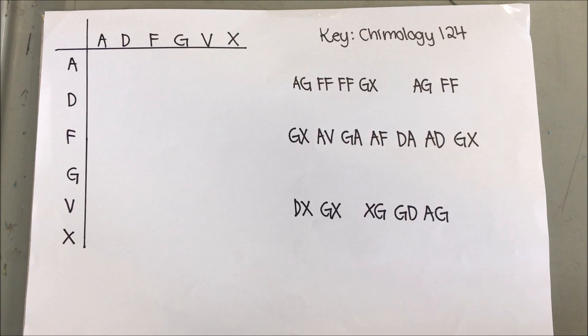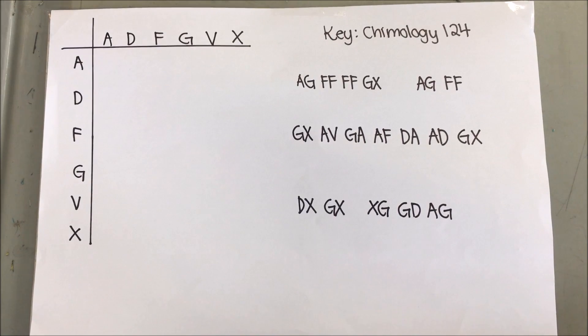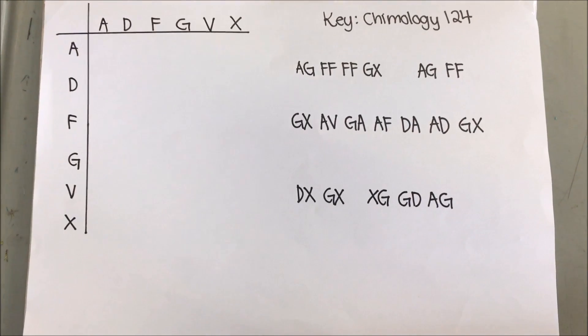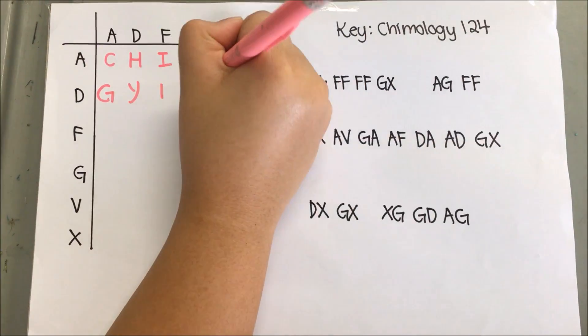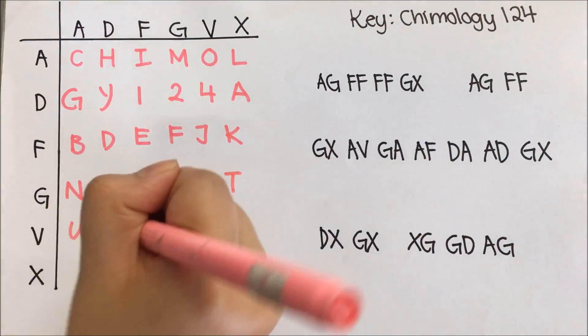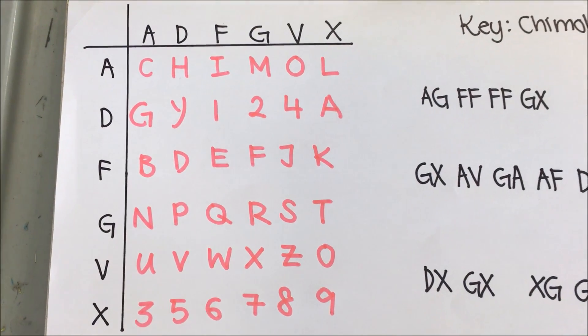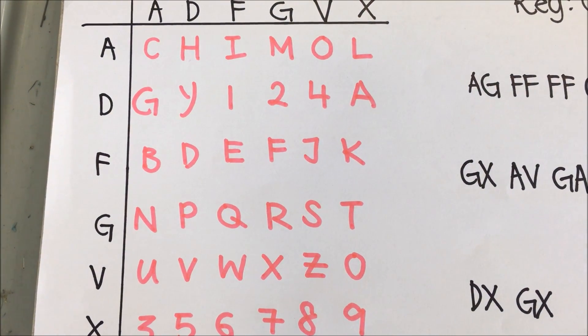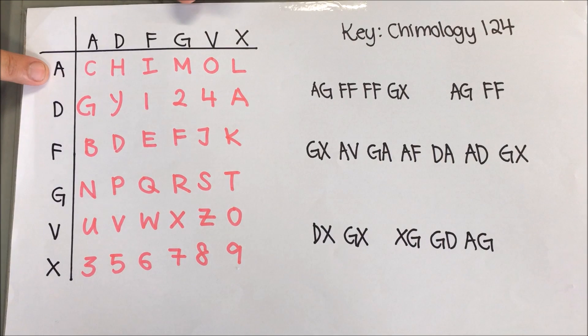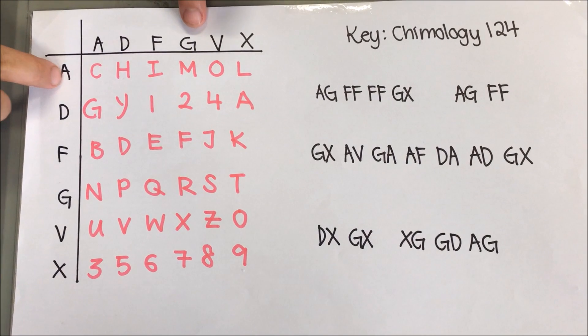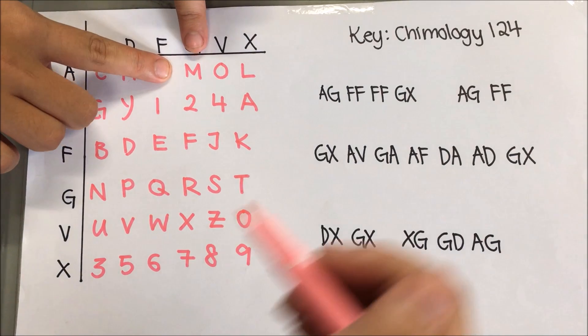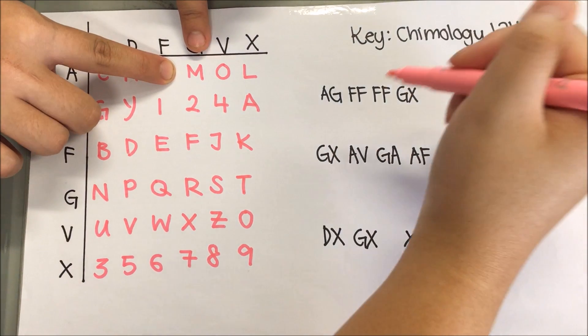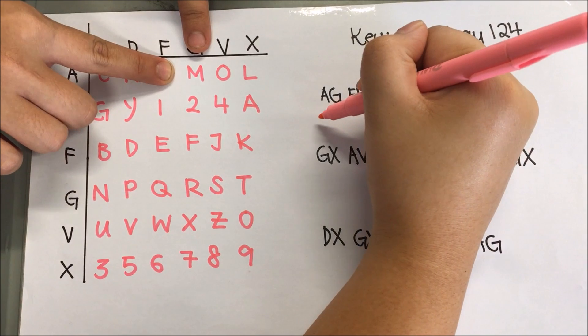Now let's take a look at an example. In this case, the message is encrypted and the key to this message is Chemology 124. Now, let's complete the polybius square. Now that it's done, let's decrypt the message. The encrypted AG will mean that the letter that we are supposed to find is in row A column G. By comparing it to the template, we can conclude that the letter in row A column G is M.